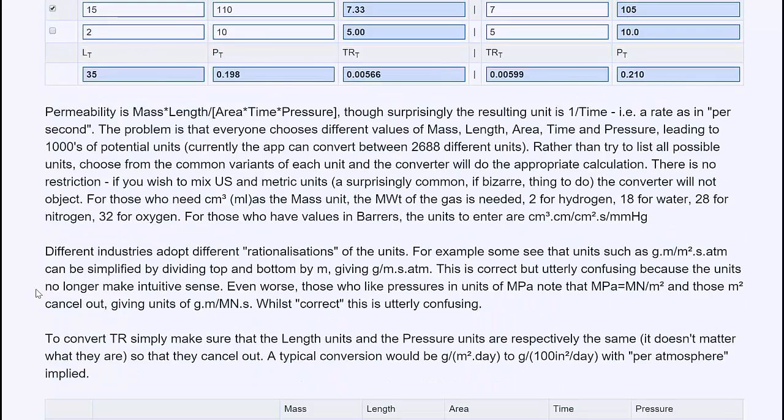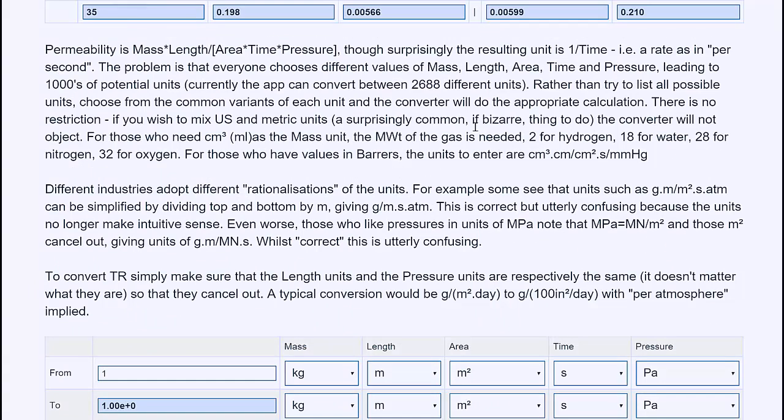But I want to emphasise one more thing. The problem that everyone faces is units. Permeability is mass times length over area times time times pressure. Though actually the real unit is one over time, so all permeabilities could be expressed per second. But that sounds very odd to us.